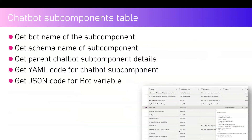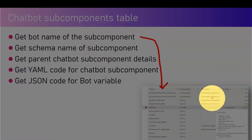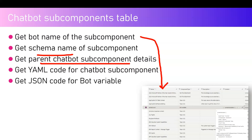From the Chatbot Subcomponent table you can extract various information: the bot name of the subcomponent, the subcomponent schema name, the parent chatbot subcomponent details, the YAML code for a chatbot subcomponent, and the JSON code for bot variables. That's it from a theoretical perspective — let's jump into the demo.